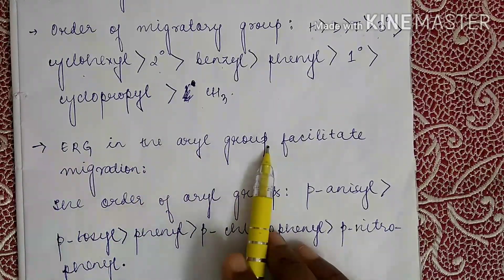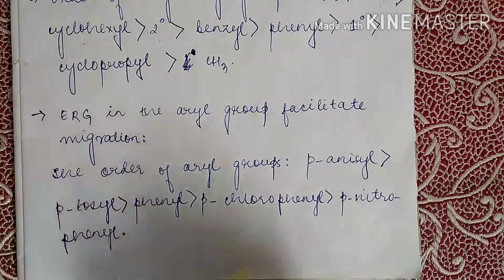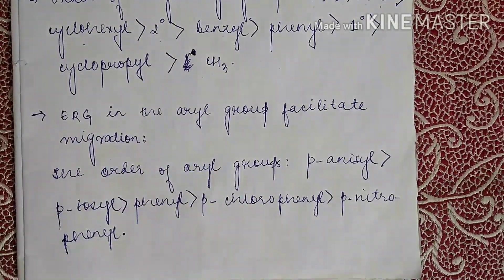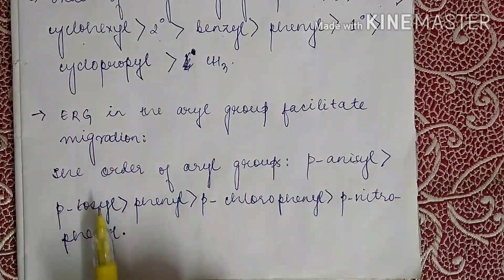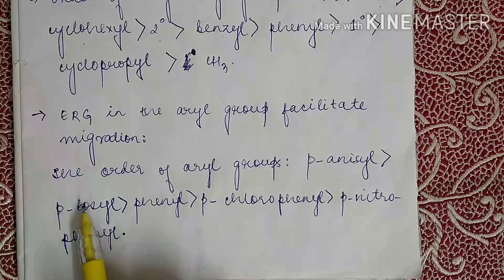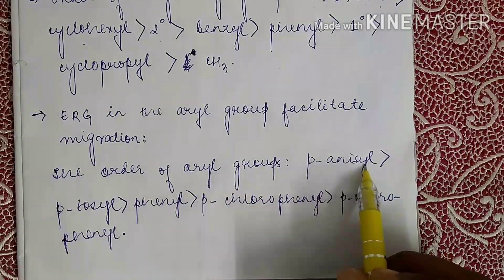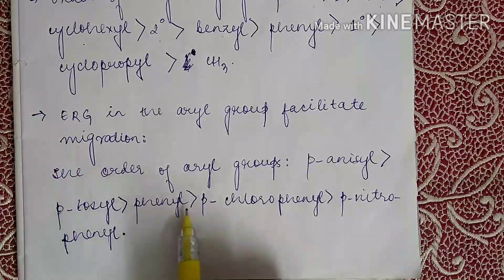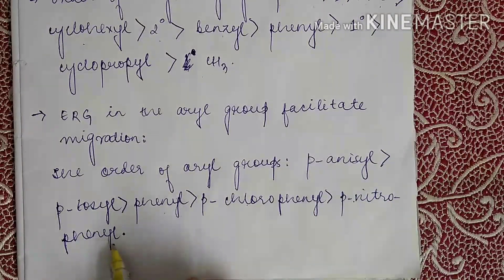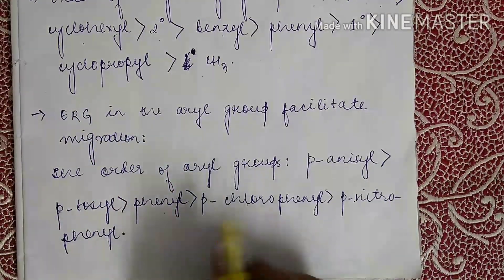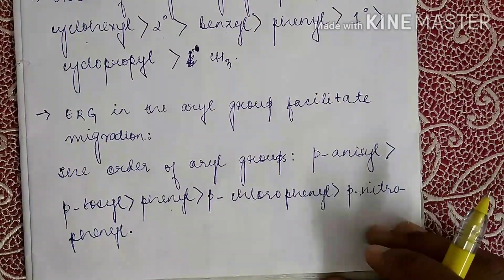If an electron-releasing group is present in the aryl group — that is, if any electron-releasing group is present in the aromatic ring — it will facilitate the migration of that corresponding group. The order of aryl group migration is: para-anisyl > para-tolyl > phenyl > para-chlorophenyl > para-nitrophenyl.